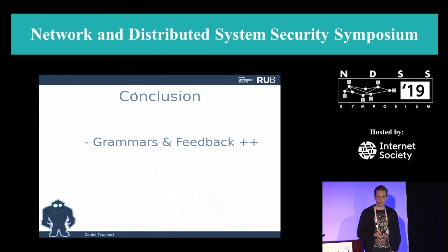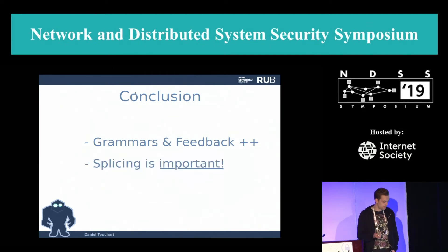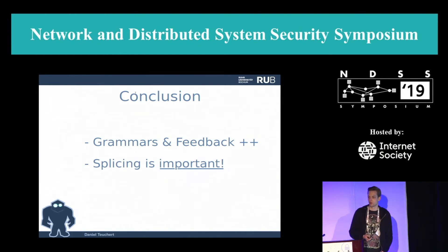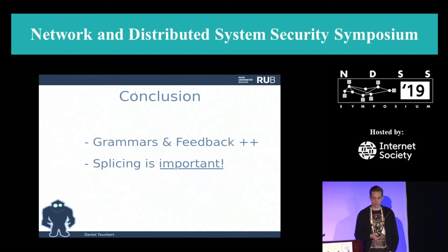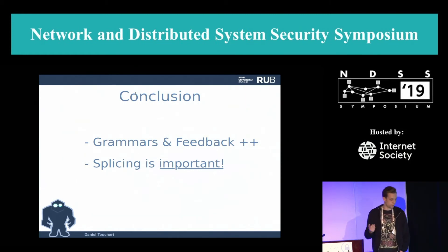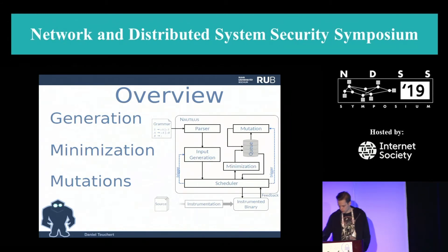Conclusion: grammars and feedback are a pretty good combination, and there's still quite a bit of space for fuzzers to grow. Adding a grammar gives you a much stronger fuzzer. Splicing is really important and has been largely neglected in the community — while we've been focused on roadblocks, splicing is where deeper code coverage and deeper exploration of a program's state machine become interesting.